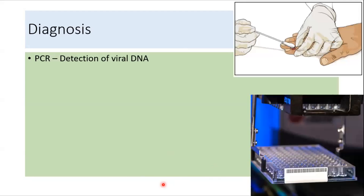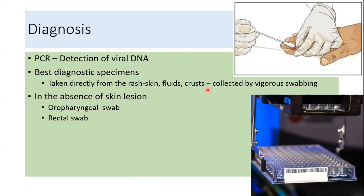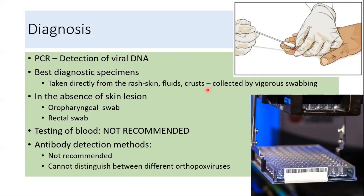For diagnosis, the preferred method is detecting viral DNA in a sample using PCR. The best diagnostic specimens are taken directly from the rash lesion or fluid from the crust, collected by swabbing. In the absence of skin lesions, an oropharyngeal or rectal swab can be taken. However, blood testing is not recommended, and antibody detection methods are also not recommended because they cannot distinguish between different orthopoxviruses.